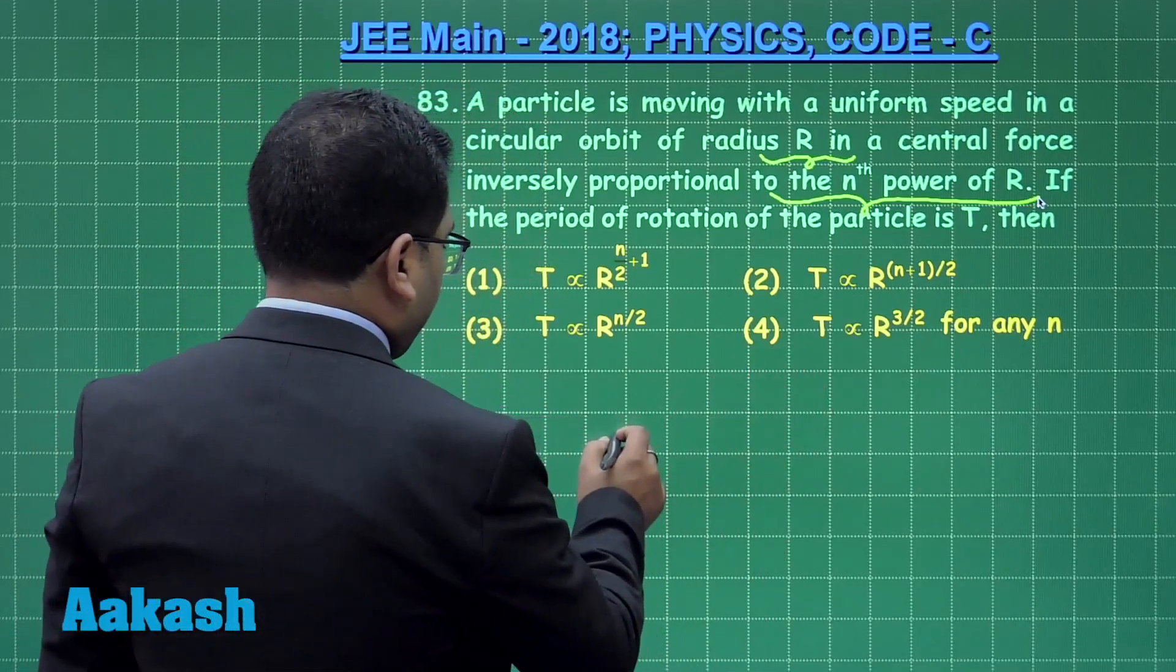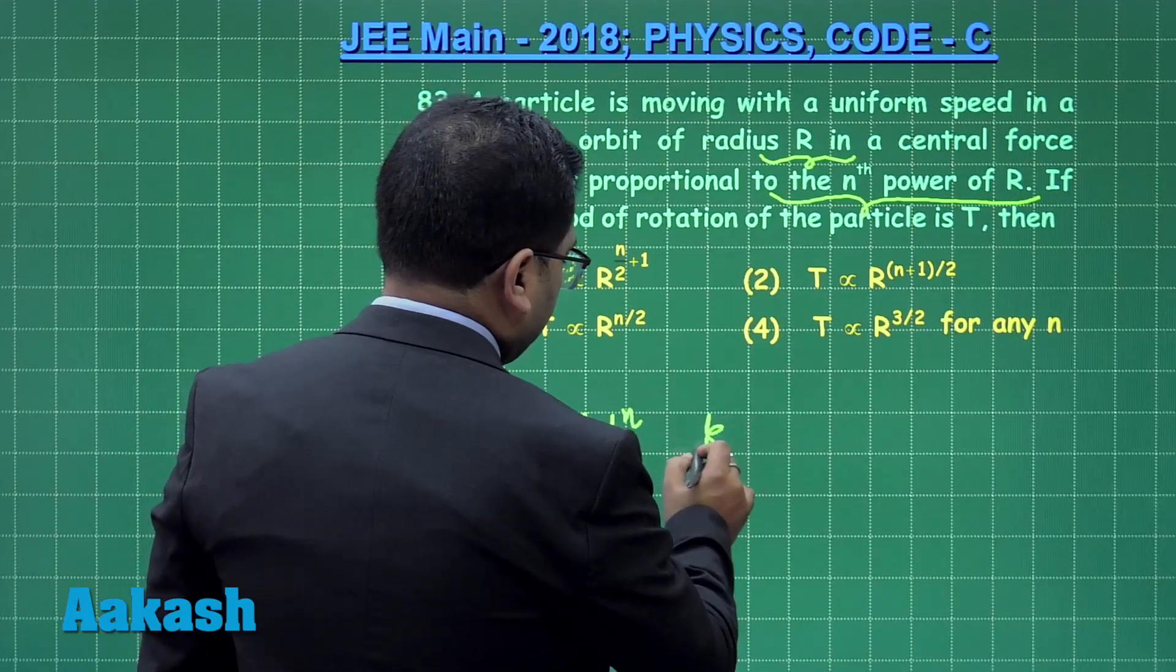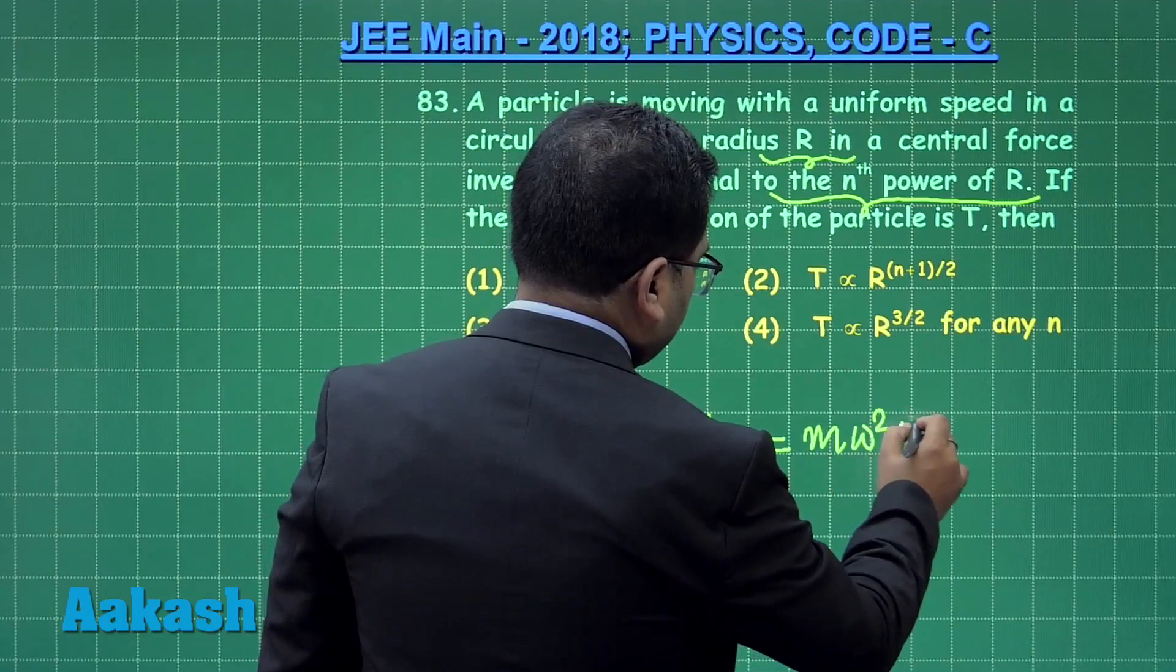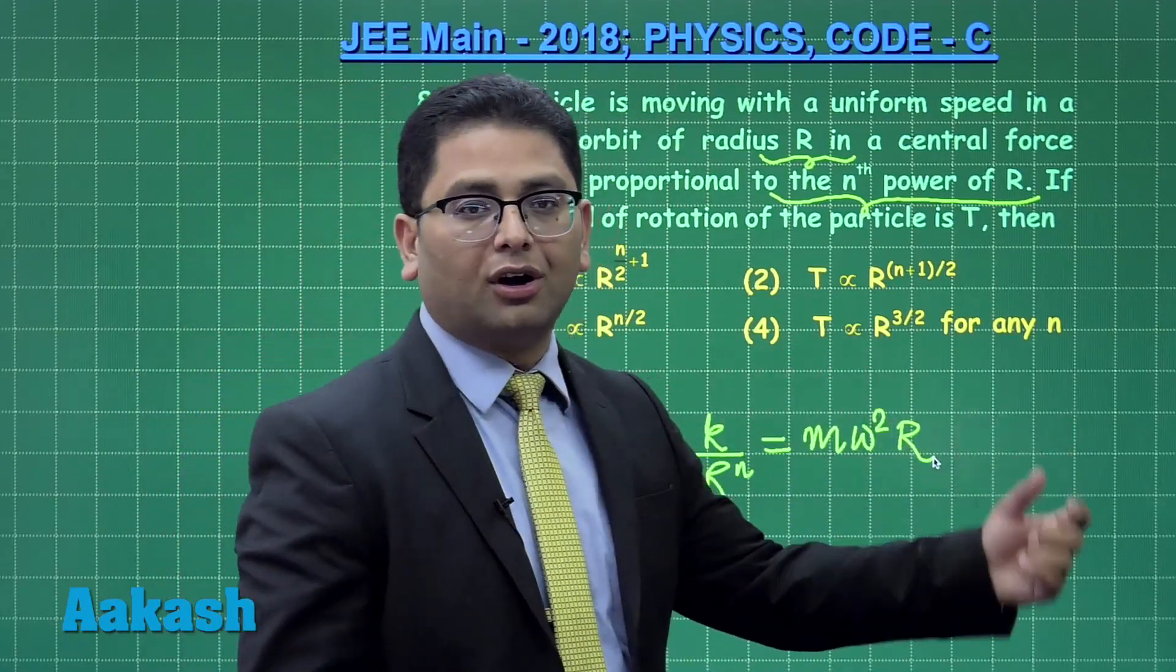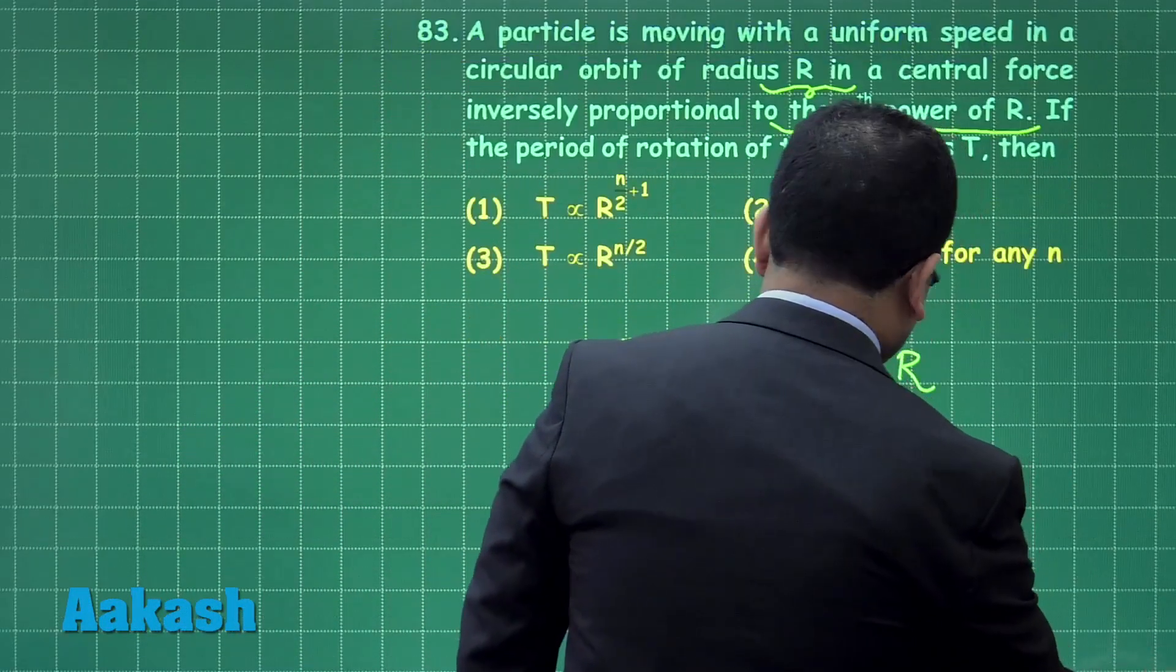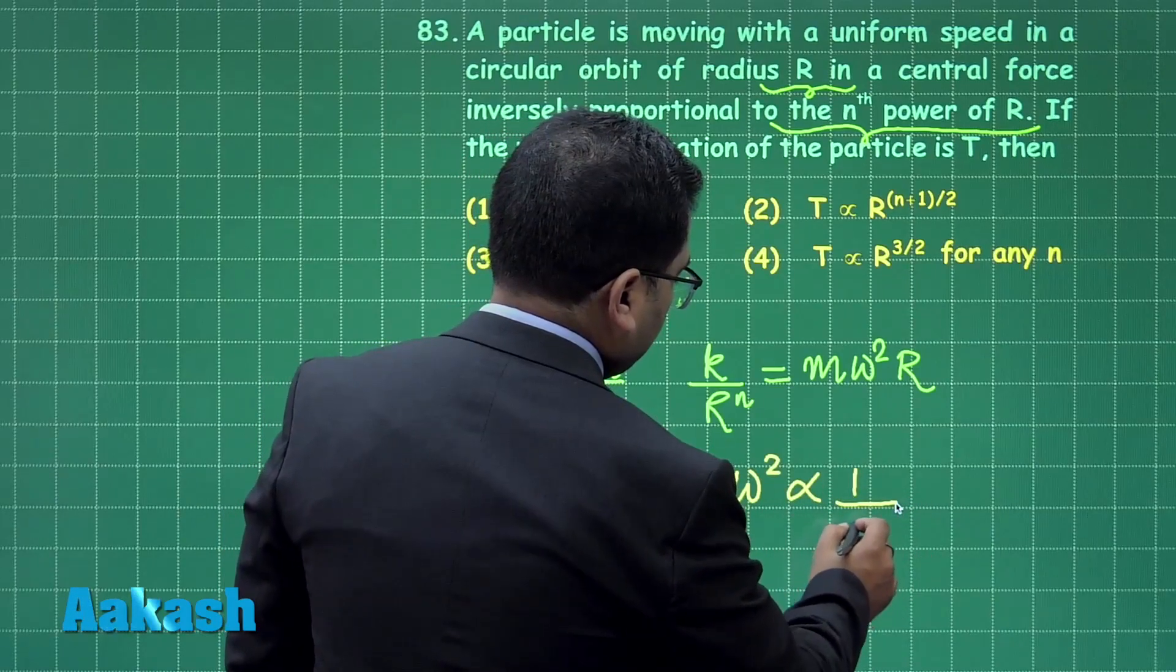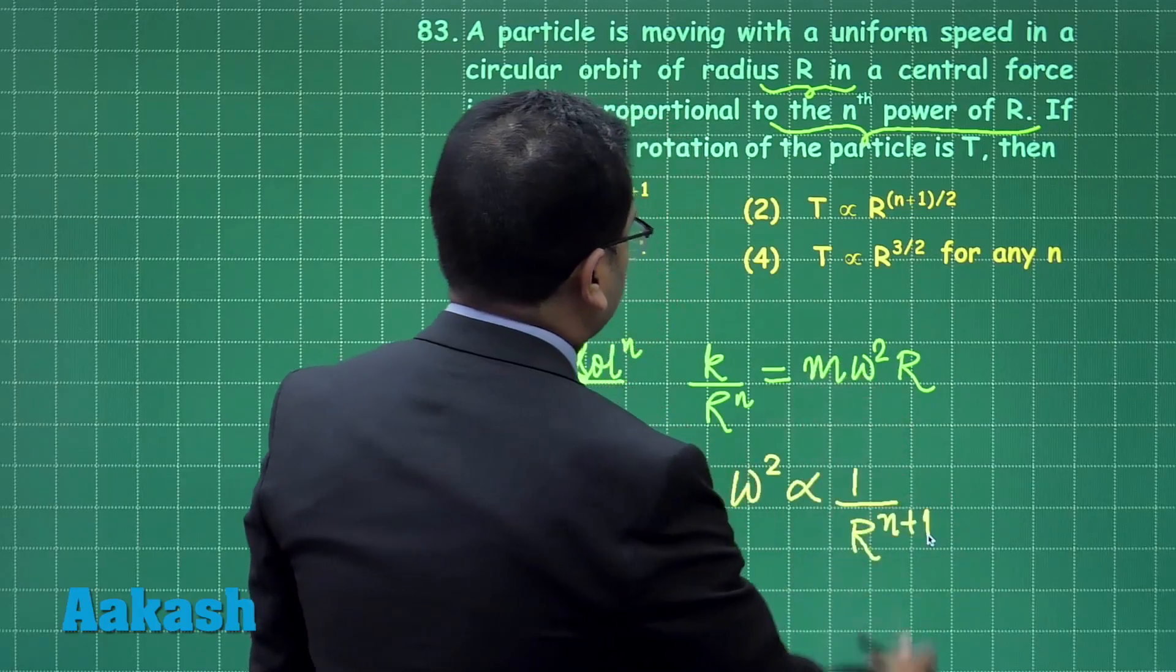The force is in fact you could see K by r raised to the power n and that is m omega square multiplied by r. The force which is the central one is the cause of the centripetal force. Let's try to see a simple calculation requires here you would be getting omega square is inversely proportional to r raised to the power n plus 1.